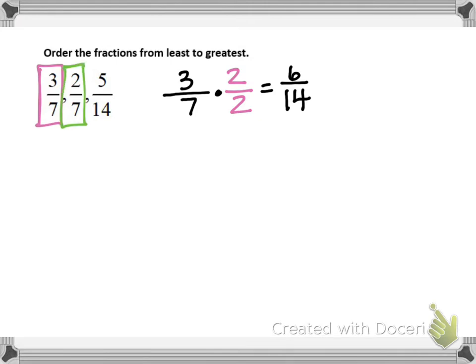Now let's look at the fraction 2/7. To create an equivalent fraction with a denominator of 14, we will also multiply by 2 over 2. So the fraction 2/7 is equivalent to 4/14.